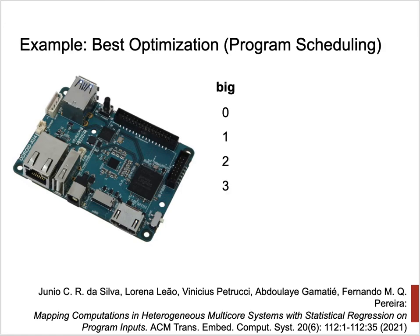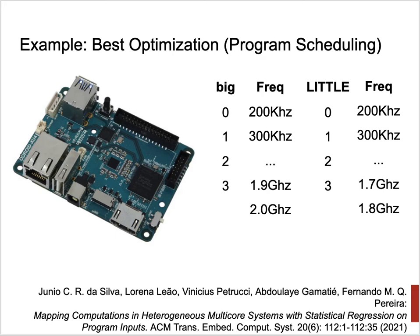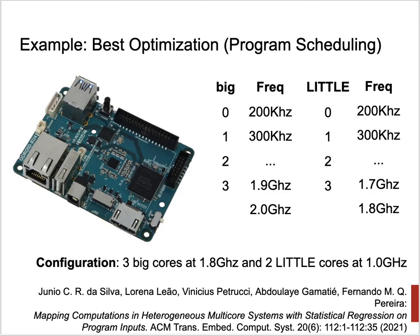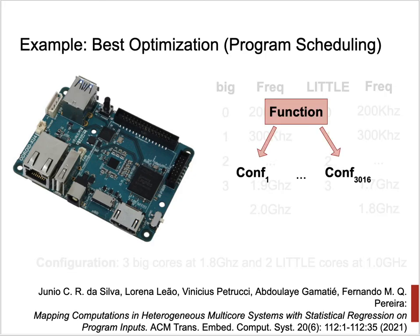The Odroid XU4 contains four so-called big cores — fast ARM A15 cores — and four little cores, which are slower ARM A7 cores. Any combination of cores can be used to run a program; a parallel program can benefit from all eight cores. There are also multiple frequencies assignable to clusters of big and little cores. For example, three big cores at 1.8 GHz and two little cores at 1 GHz. In total, there are more than 3,000 different configurations.